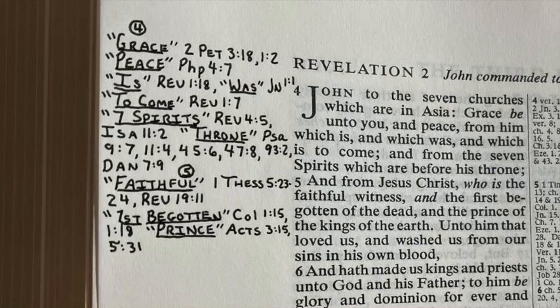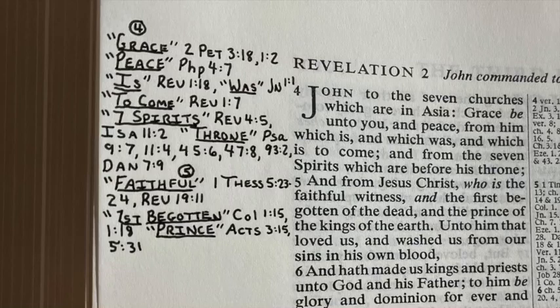So let's look at that next one — 'throne.' This is a good one. Let's look at God's throne — there are a lot of good ones in Psalms. Psalms 9:7 says, 'But the Lord shall endure forever. He hath prepared his throne for judgment.' So it's a throne of judgment. Psalms 11:4 — 'The Lord is in his holy temple. The Lord's throne is in heaven. His eyes behold, his eyelids try the children of men.' So the Lord's throne is in heaven — he's the most high.